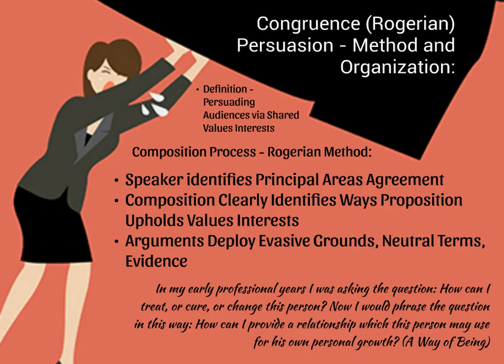This has a very specific process. Number one, you identify principal areas of agreement between yourself and your opposition — which usually isn't too hard, because most of us have very similar goals regardless of how we are opposed to one another in other respects. And then you create a composition, speech, debate, or even a piece of writing that clearly outlines the ways in which your proposition upholds those shared values and interests, and then supply arguments that deploy evasive grounds. In other words, you accentuate the positive and delimit the negative. You provide neutral terms that everyone can agree on, and you supply evidence that allows a person to understand that your ground, your claims, your argument, your proposition will help them become more of themselves.